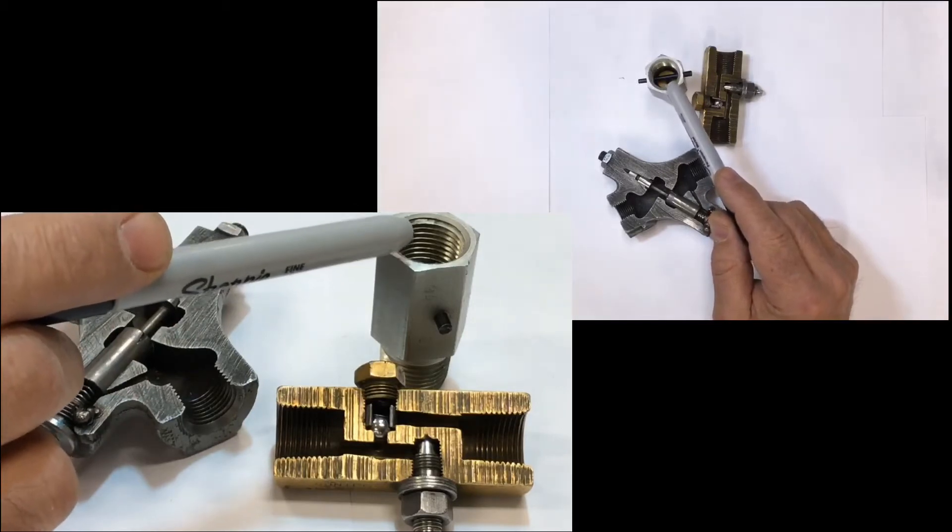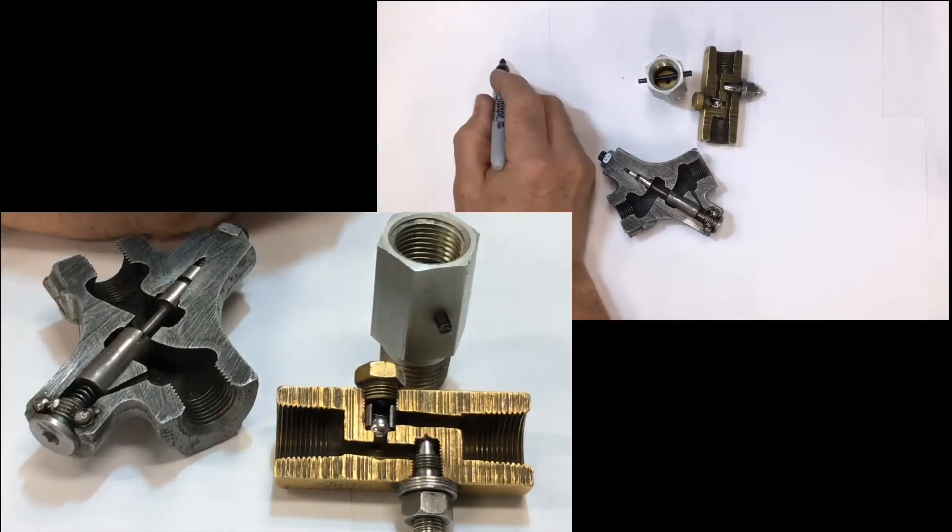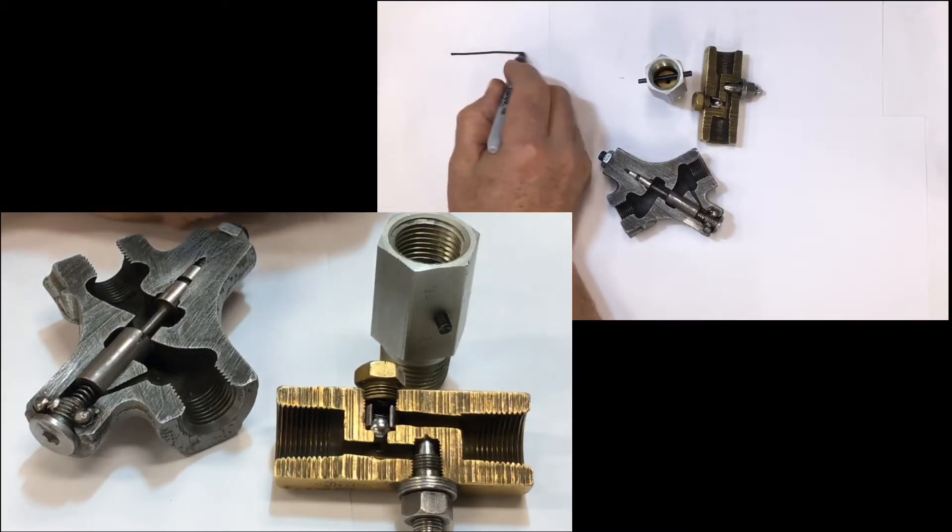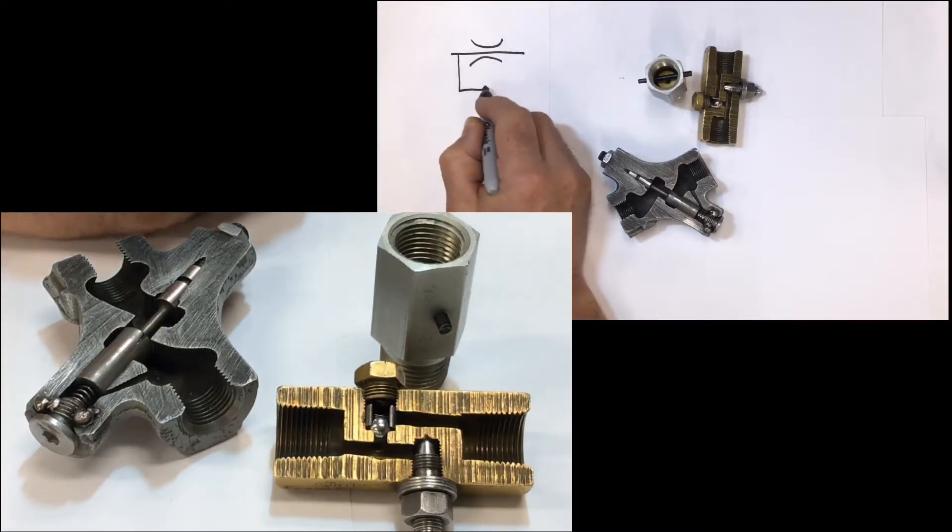So this one here, the non-restricted one, schematically drawn, would easily be just a line with your fixed orifice in there and then you put a check ball or draw a check ball around it, a check ball in seat.